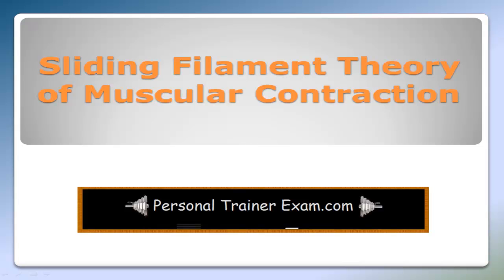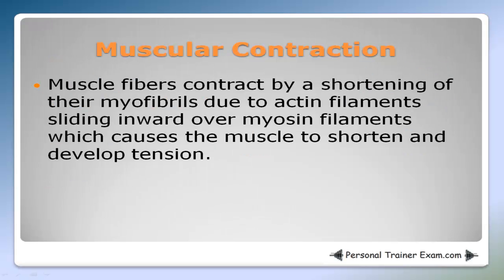Hello and welcome to personaltrainerexam.com. Today I'm going to be talking about the sliding filament theory of muscular contraction. Muscle fibers contract by shortening of their myofibrils due to actin filaments sliding inward over myosin filaments, which causes the muscle to shorten and develop tension.